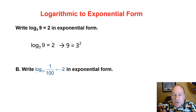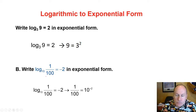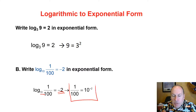Another example: log base 10 — a very common base — of 1 over 100 equals negative 2. We get 1 over 100 equals 10 raised to the negative 2 power. So 1 over 100 equals 10 to the minus 2 — that's the exponential form.